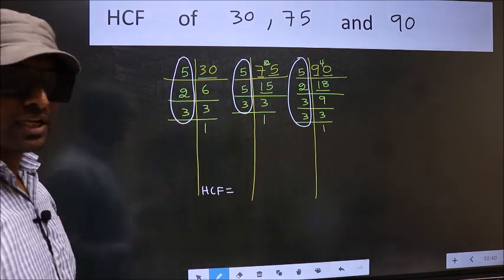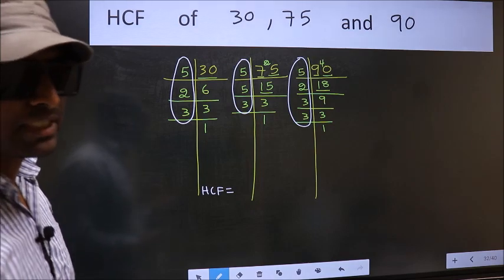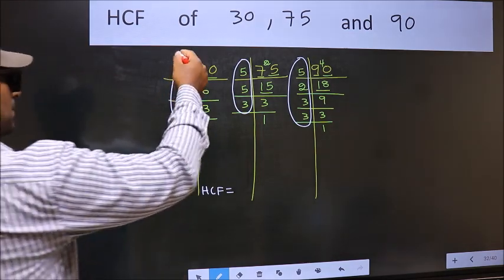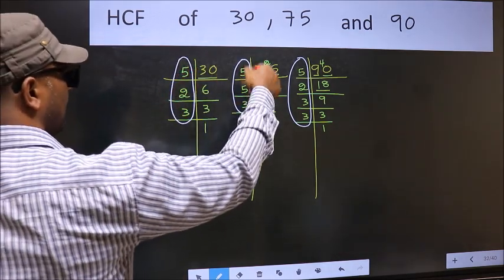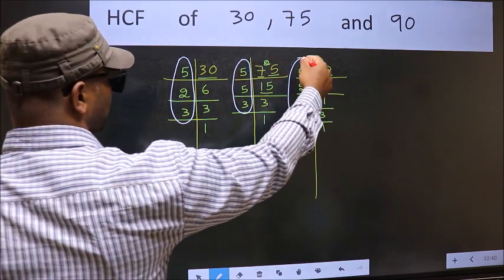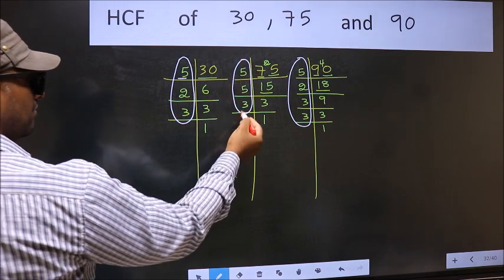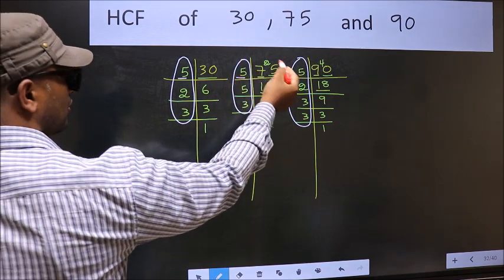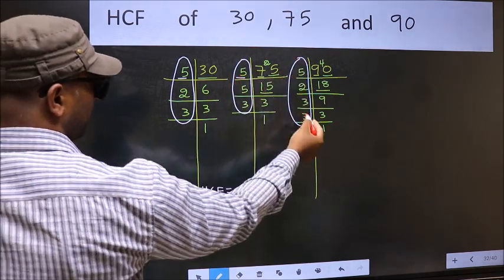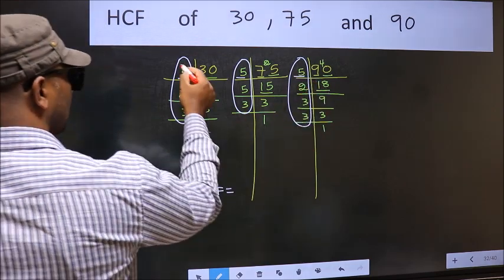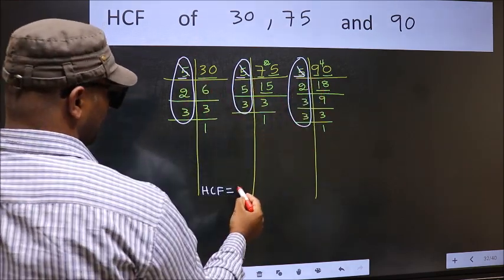So now let us find the numbers which should be present in these 3 places. Starting with the number 5. Do we have 5 here? Yes. So go to the next place. Do we have 5 here? Yes. So cut 5 right here.